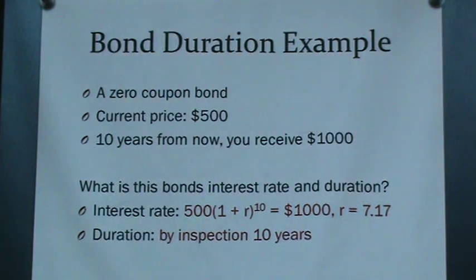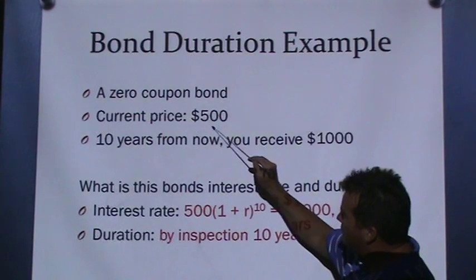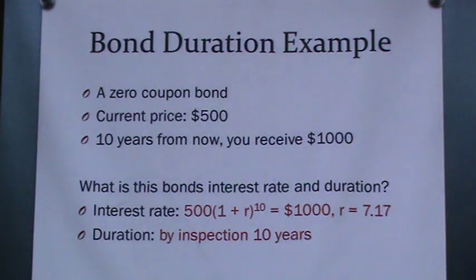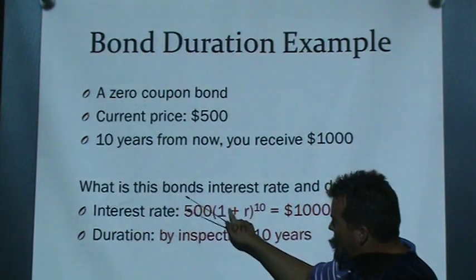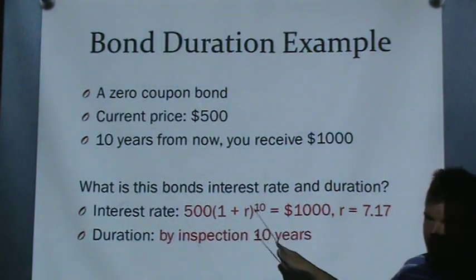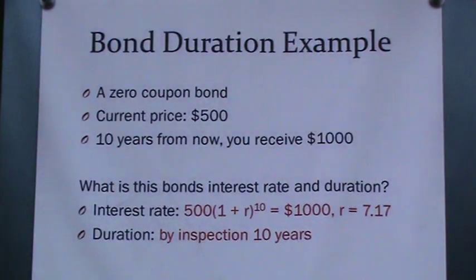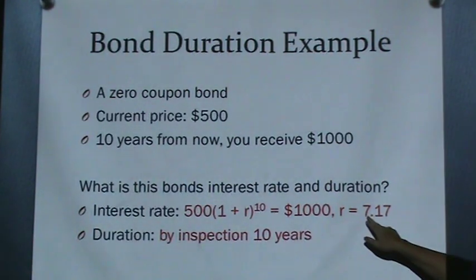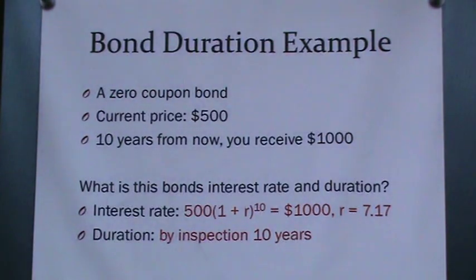Simple example: a zero-coupon bond has a current price of $500. Ten years from now you receive $1,000. What is the interest rate and what is the duration? For the interest rate: $500 today grows at rate R for 10 years to equal $1,000, so solving gives R = 7.17%. The duration is straightforwardly 10 years, since you receive one single payment at year 10.